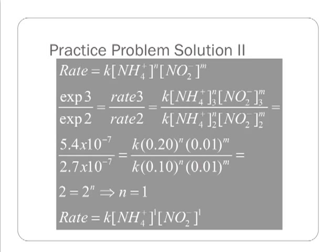And once again, stuff is going to cancel out. The Ks cancel out. The 0.1 to the M's cancel out. And I can isolate the effect of the reaction rate on the order of NH4 plus, the N value. And this is getting kind of boring, unfortunately. It keeps coming out to one. Now, that's not always going to be the case.